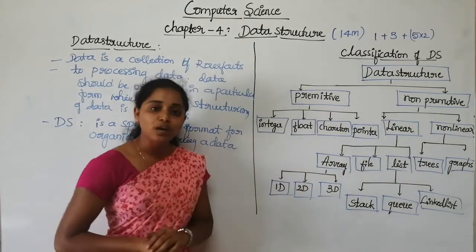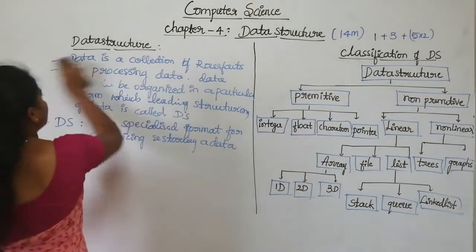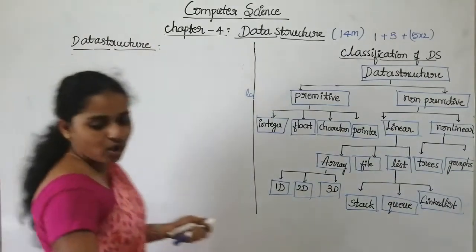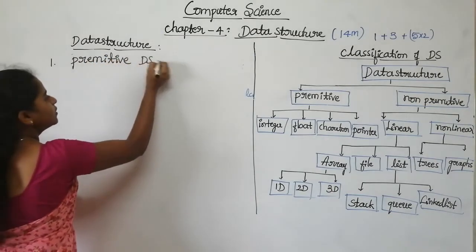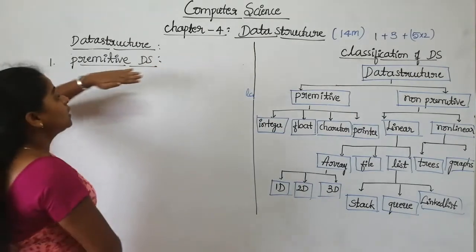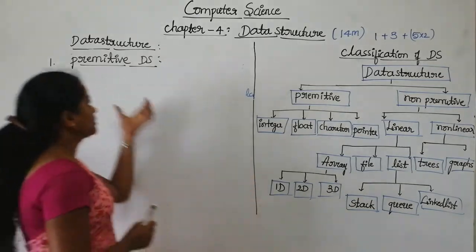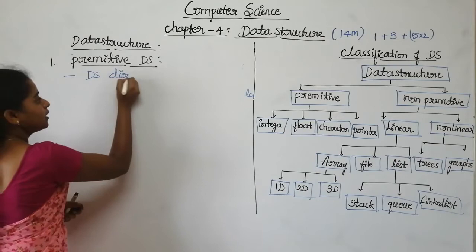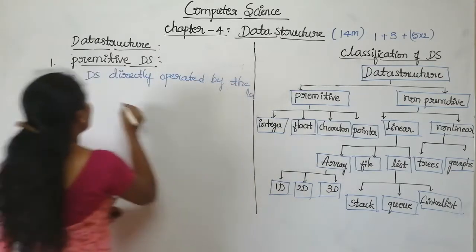In this class, let me start to learn about the first type of data structure, that is called primitive data structure. The data structure that can be directly operated by the machine level instruction is called as primitive data structure.